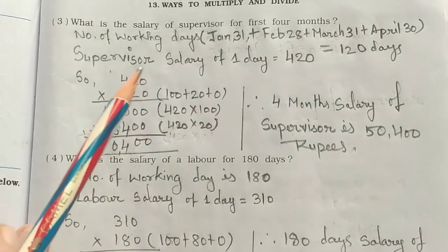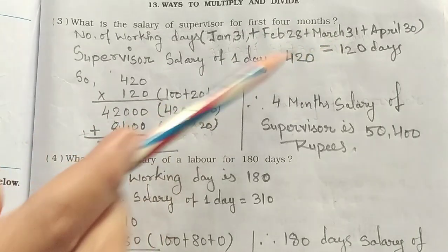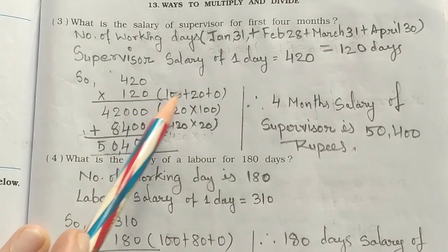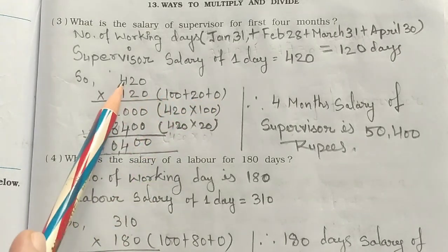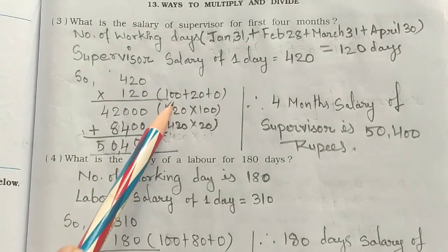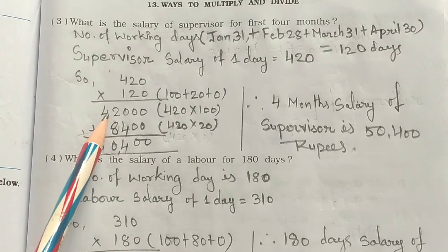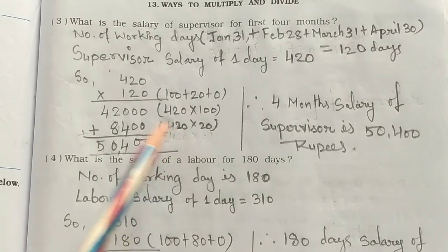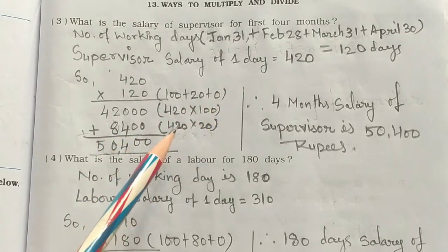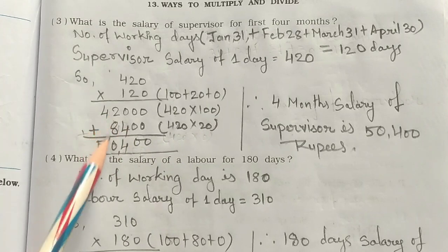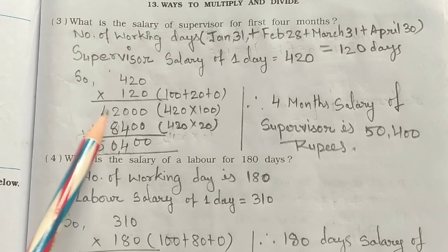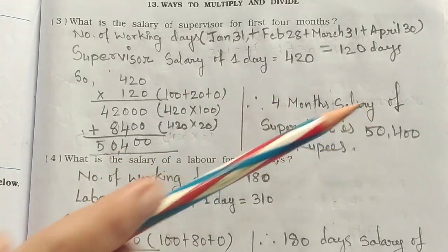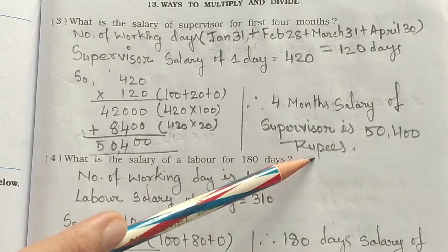We multiply 420 × 120. Breaking it down: 420 × 100 = 42,000, 420 × 20 = 8,400, and 420 × 0 = 0. Adding these gives 50,400. Therefore, the 4-month salary of the supervisor is 50,400 rupees.